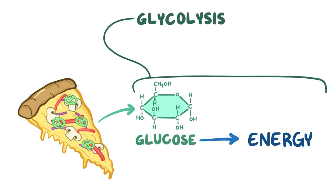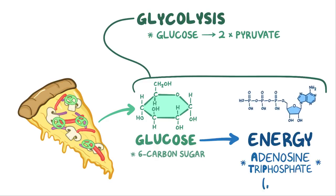Glycolysis is a series of enzymatic reactions in which glucose, a 6-carbon sugar molecule, is broken down into two 3-carbon pyruvate molecules. And as glucose gets processed, energy is produced in the form of adenosine triphosphate, or ATP.